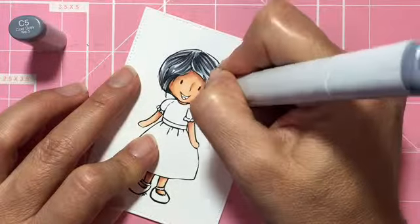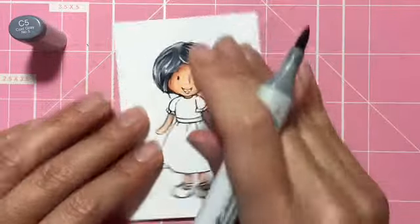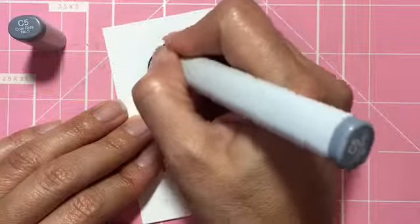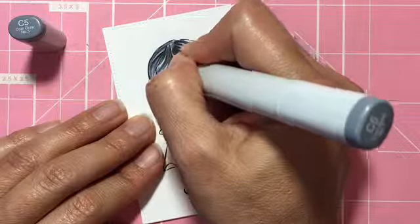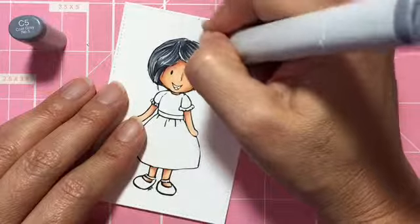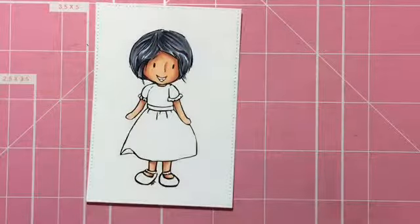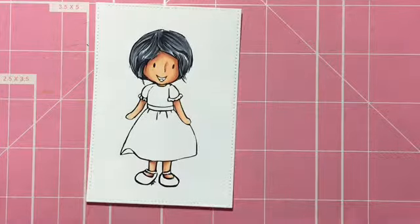I normally just use three colors but in this case I decided to use four. But as you can see in the end, I will stop at C3 and not use C1. Here I am just continuing to pull out some of that dark color.